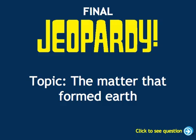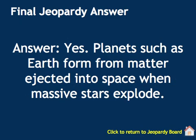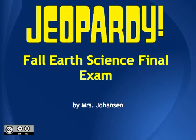For the final jeopardy question — the matter that formed the Earth: a student argues that Earth could have formed only after at least one previous generation of stars had come into existence and then died. Is this student correct? Yes — planets like Earth form from matter ejected into space when massive stars explode, so some stars exploded first, then Earth was able to form. That was actually 26 questions, so you only have four surprises. Make sure you watch this video several times to be prepared — the final accounts for 15% of your grade, so good luck!